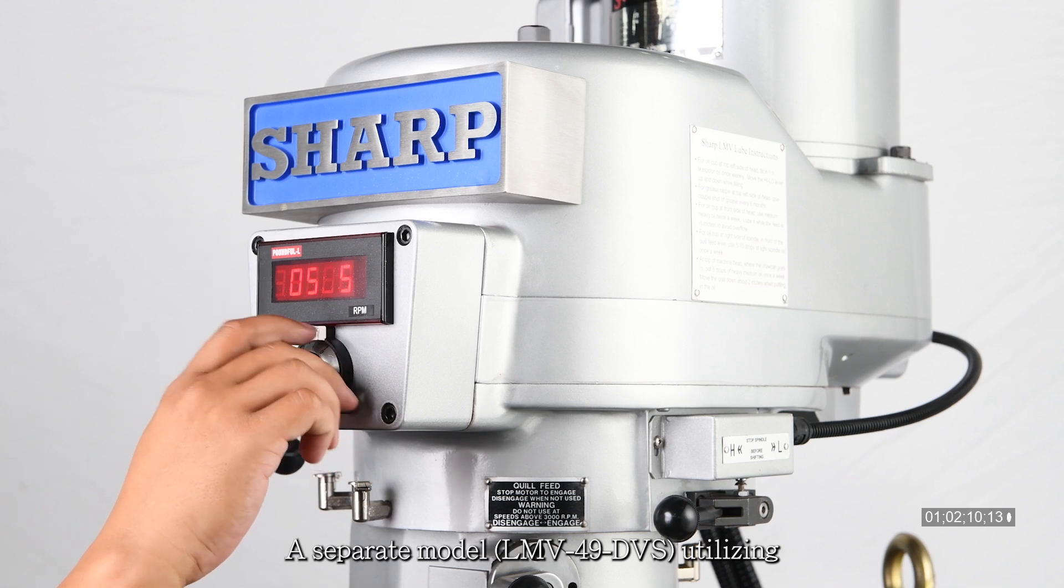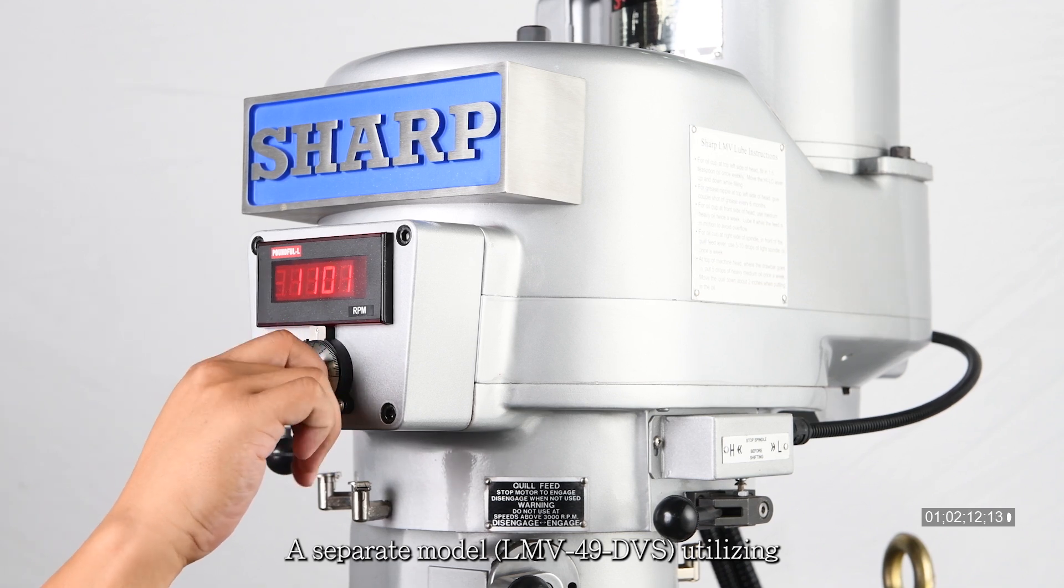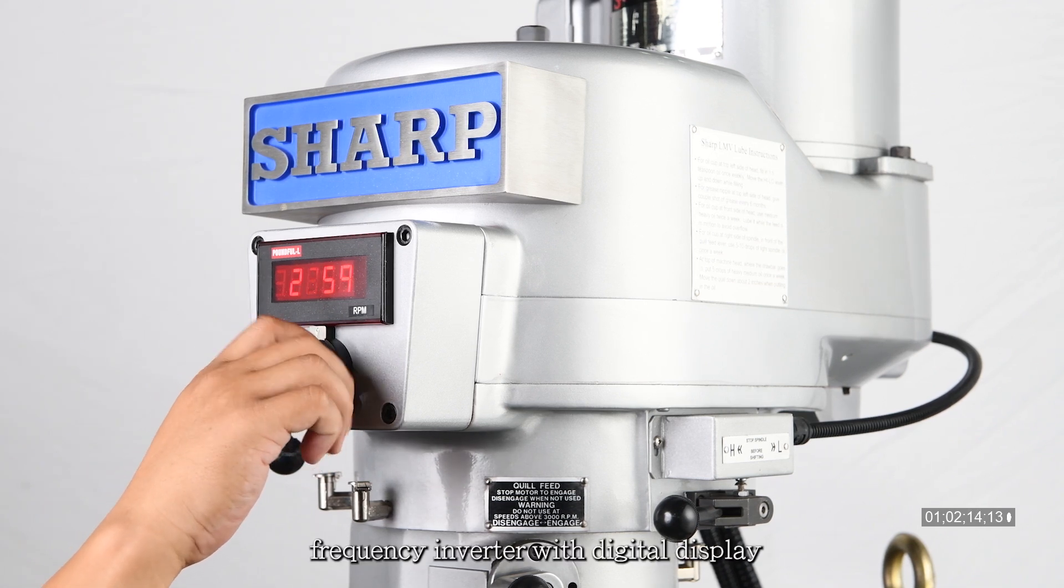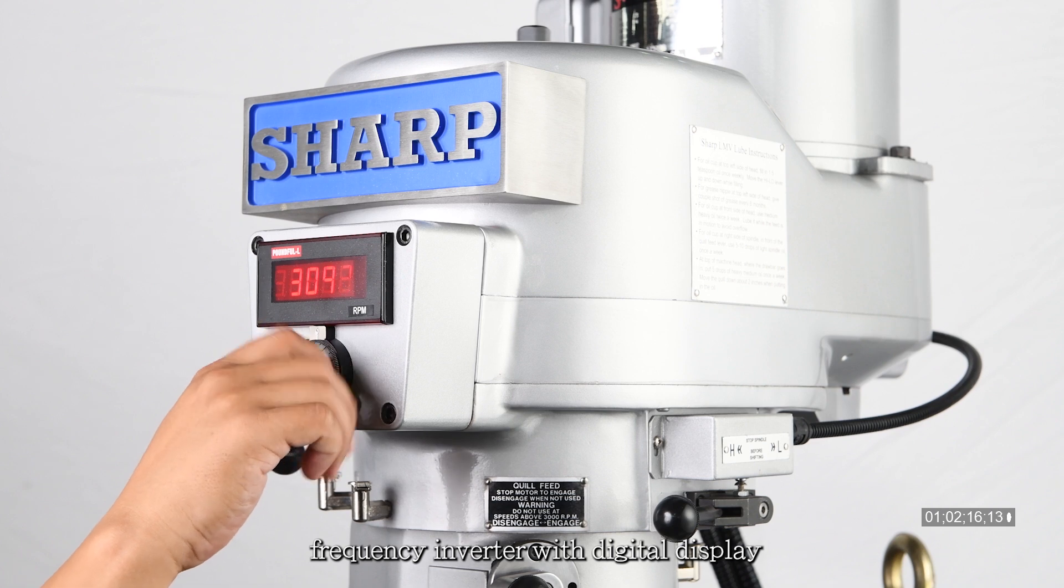A separate model, the LMV49DVS, utilizing a frequency inverter with digital display, is available for accurately indicating the spindle speed.